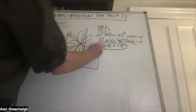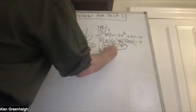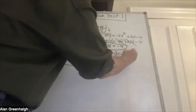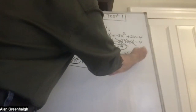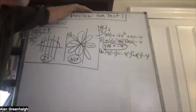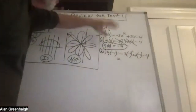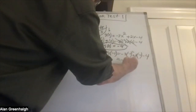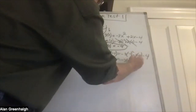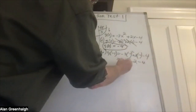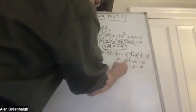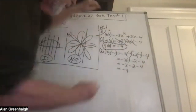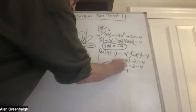The second problem evaluates the function using negative one as the value of x. You have to be careful because there are negatives and exponents. Negative one to the second is positive one, and two times negative one is negative two. So: negative three minus two minus four equals negative nine. Therefore g of negative one equals negative nine.